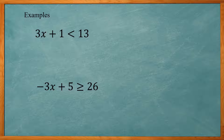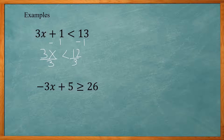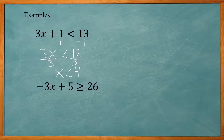This can be similar to solving equations where you want to get the x by itself. So this first one: 3x plus 1 is less than 13. I want to get the x by itself, so I subtract 1 from both sides. That gives me 3x is less than 12, and then divide both sides by 3, giving me x is less than 4. With the inequality, it's not one specific value — any value less than 4 will work.